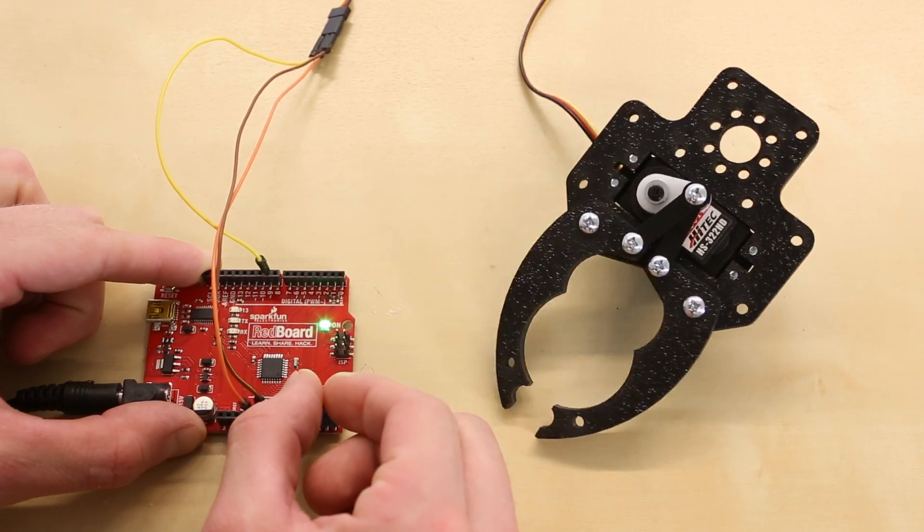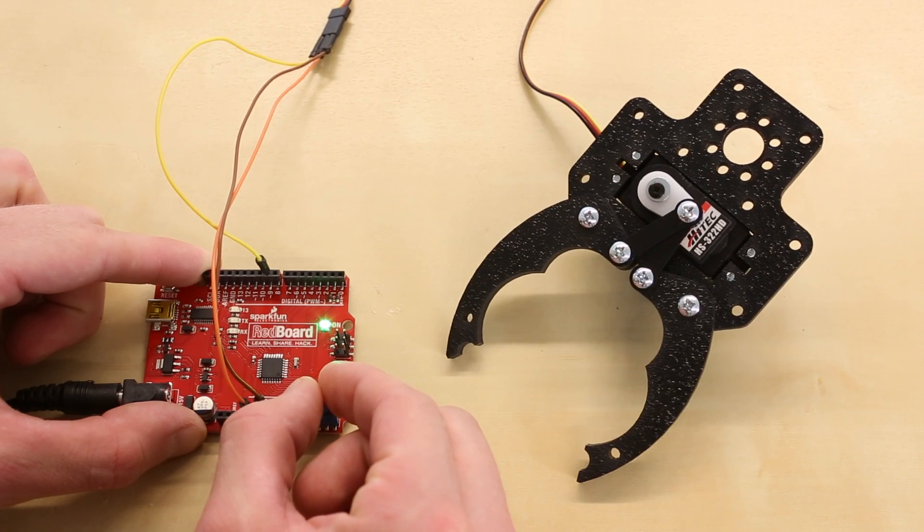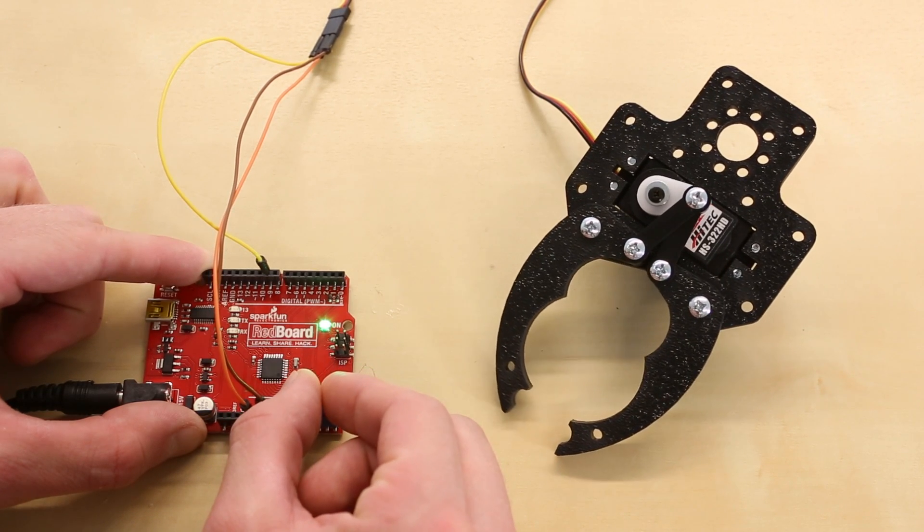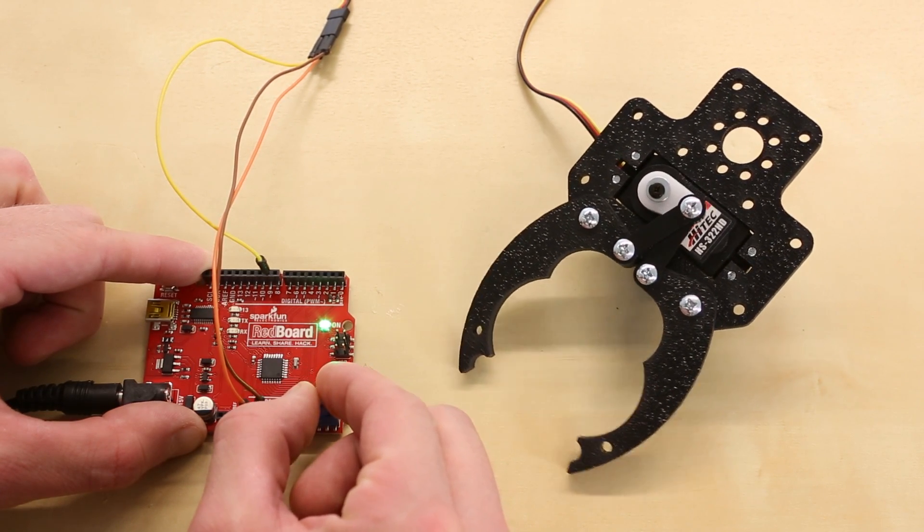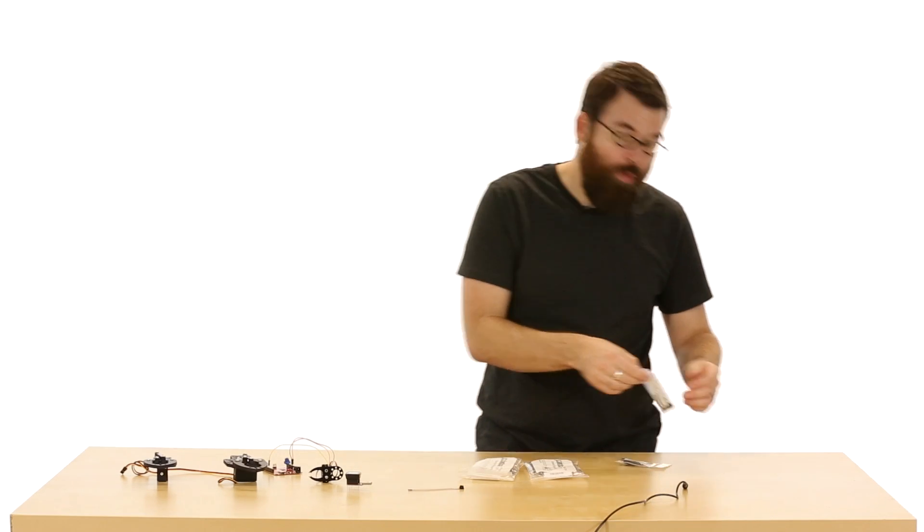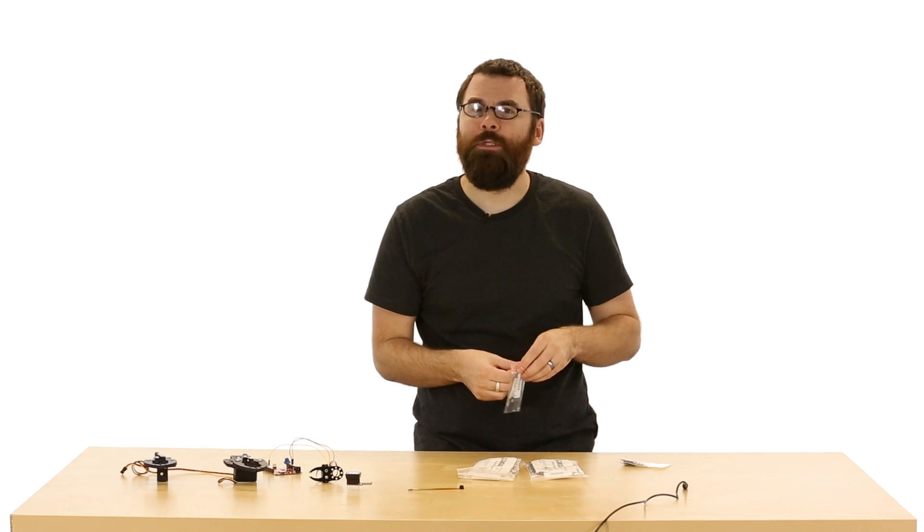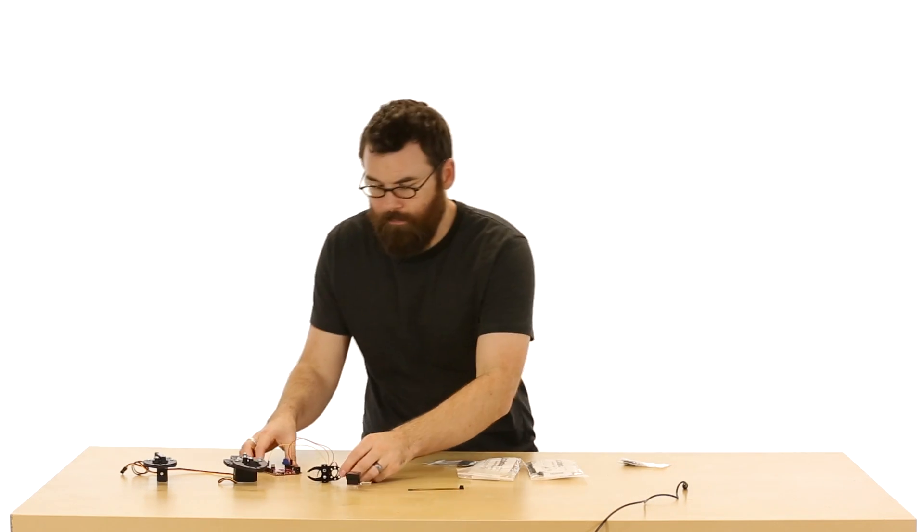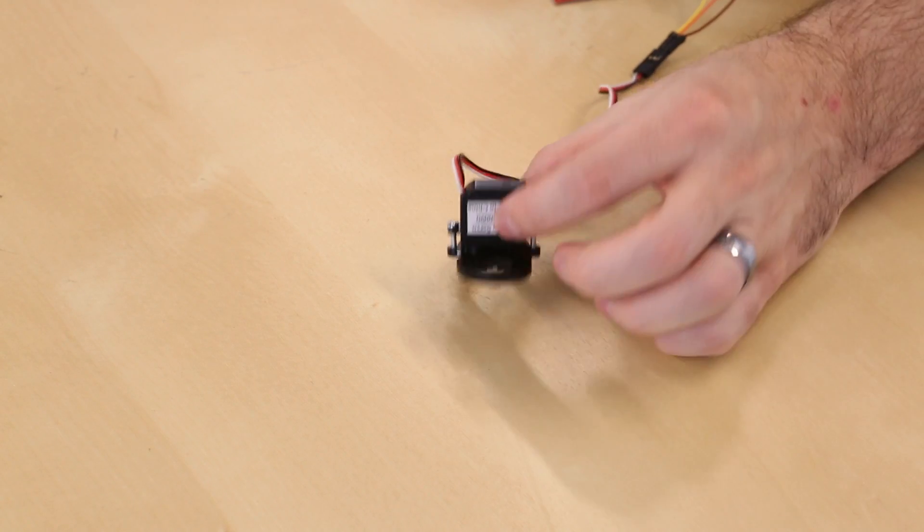Next up we have four new gripper robotic arms from Actobotics. We have them in two different sizes and two different styles. First up, let me talk about the micro ones. These work with the sub micro servo size. These are the servos that look a little something like this, that size.